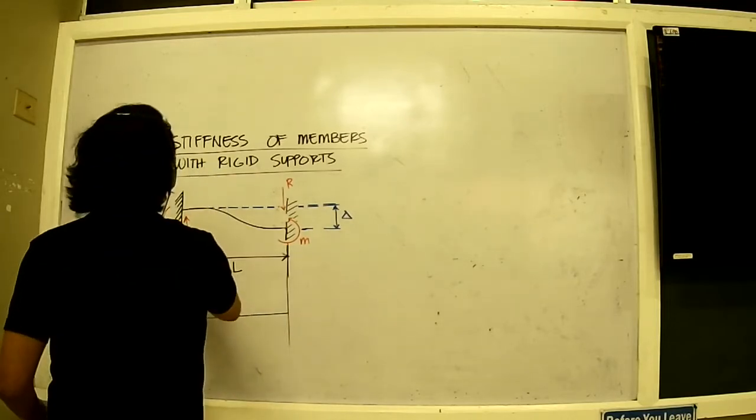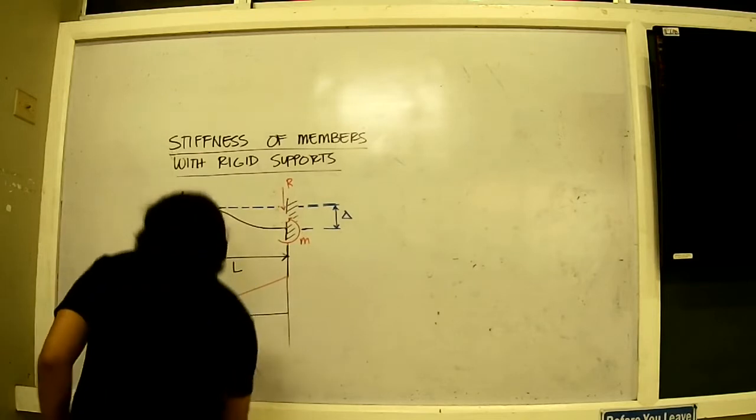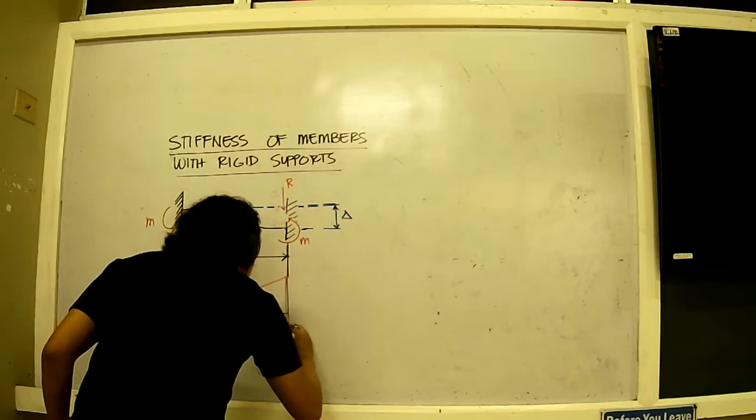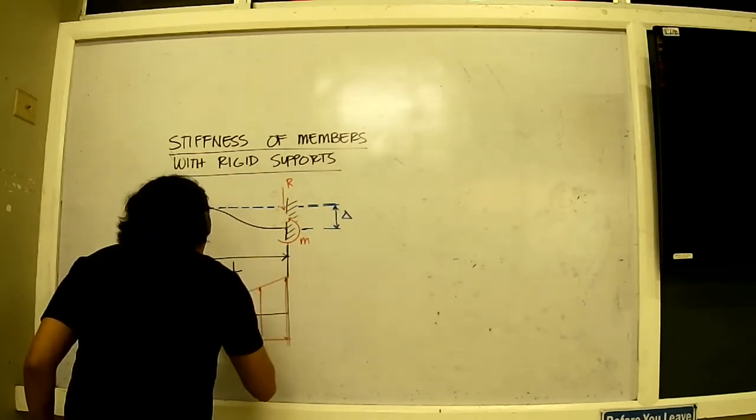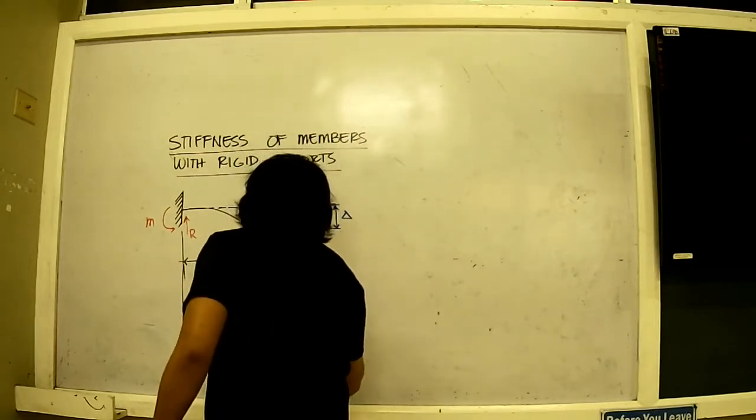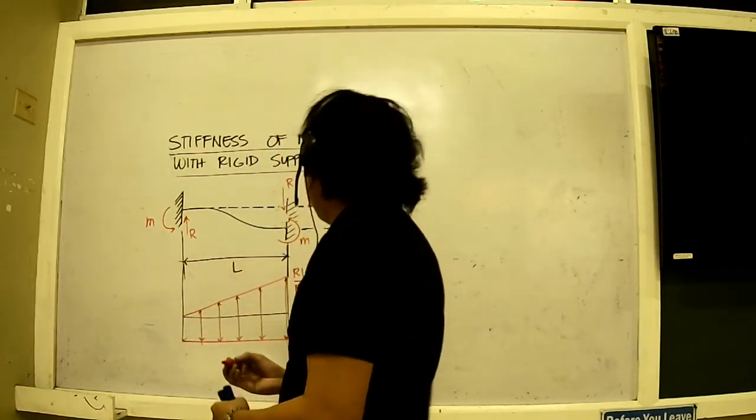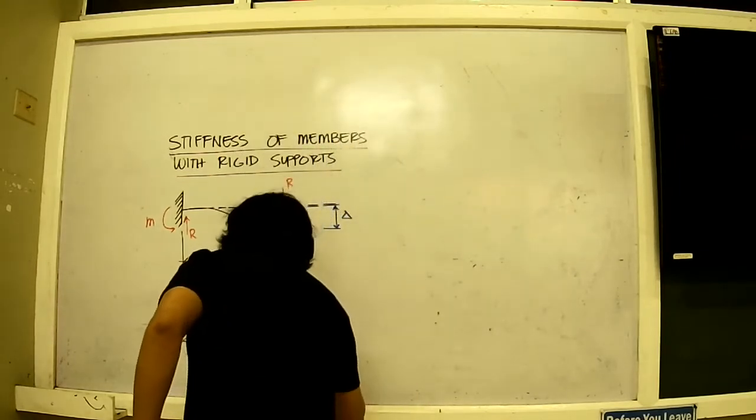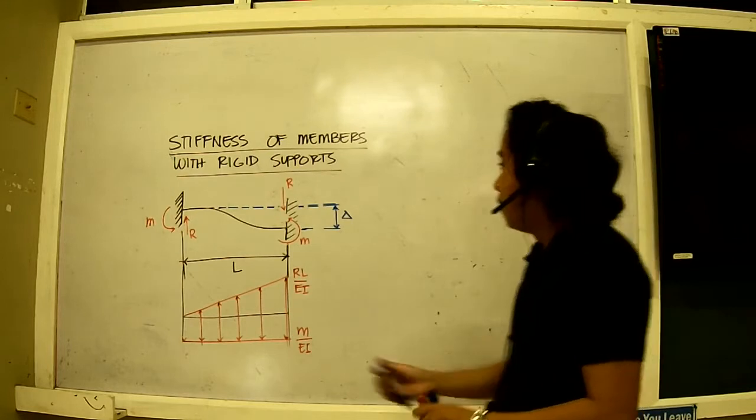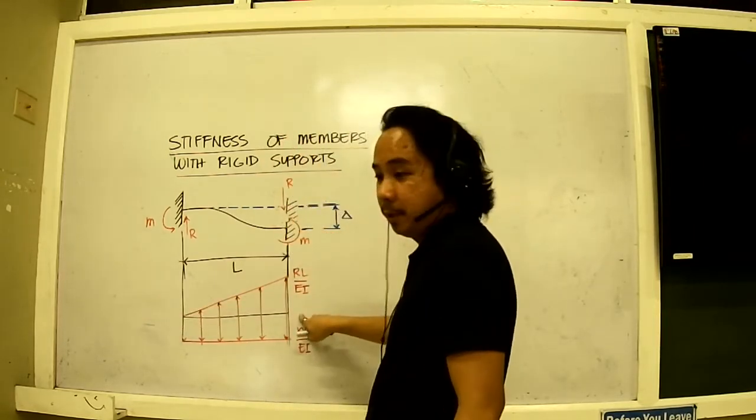When I draw the conjugate beam for this, R should be going this way straight. M is also going down here. So we have a conjugate beam. This is equal to R times L divided by EI and we will have this. We have this moment here divided by EI. We have our conjugate beam. This is a fixed end, conjugate beam version is there's no fixed end, this is a free end as well.